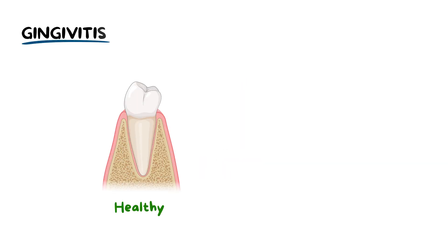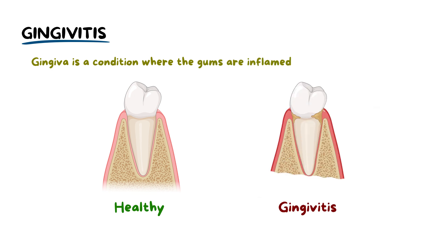The gingiva, or gums, are the soft tissues providing support and protection to the teeth. They can become inflamed or swollen due to bacterial plaque and poor oral hygiene, leading to a condition known as gingivitis.